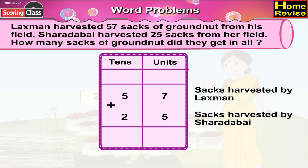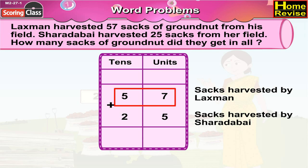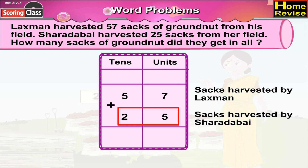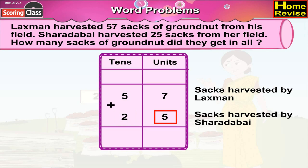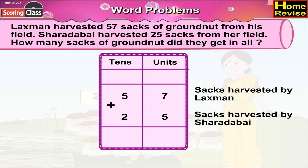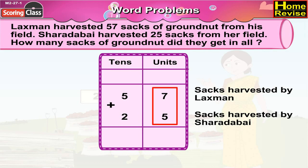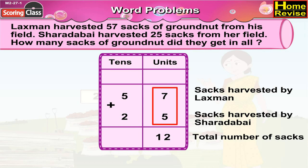The total number of sacks of groundnut harvested would be sacks harvested by Lakshman plus sacks harvested by Shaakabai. So it is 57 plus 25. That means 5 tens 7 units plus 2 tens 5 units. Now 7 plus 5 makes 12.